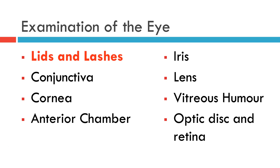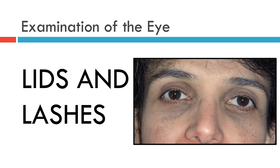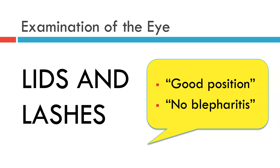We're going to start with the eyelids and eyelashes. This patient has healthy eyelids and eyelashes. All four eyelids are well opposed to both globes. There is no build-up of discharge nor dead skin on the eyelashes of either eye. Neither eyelid turns in nor out, so there is no entropion or ectropion. The eyelids are therefore in good position with no blepharitis. And that's all there is to examining the lids and lashes.